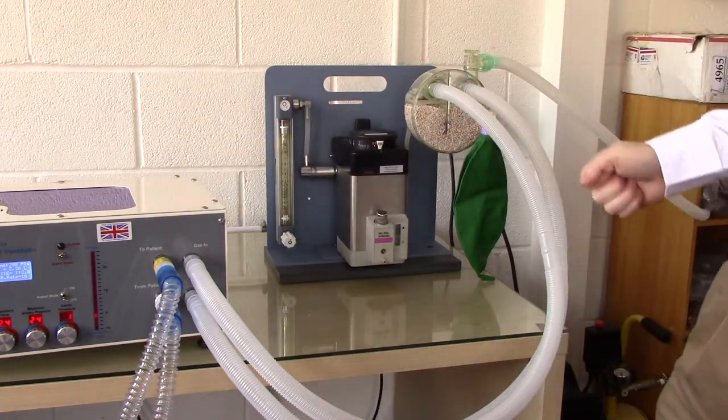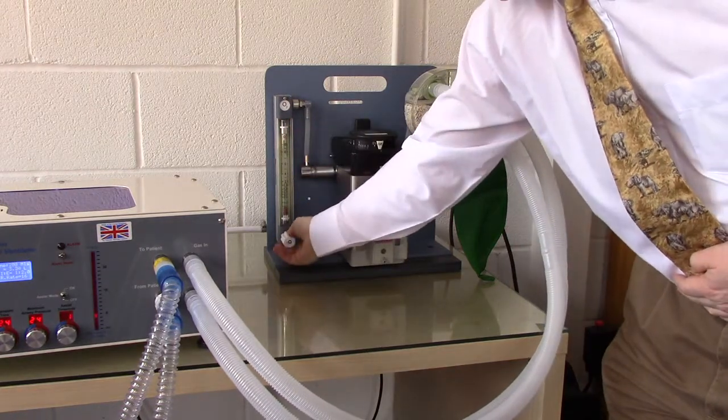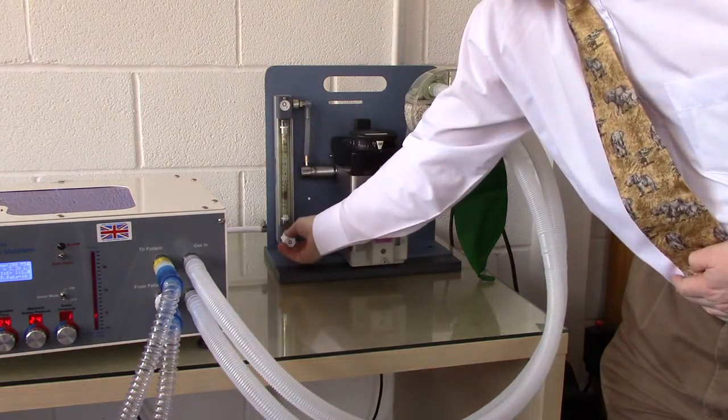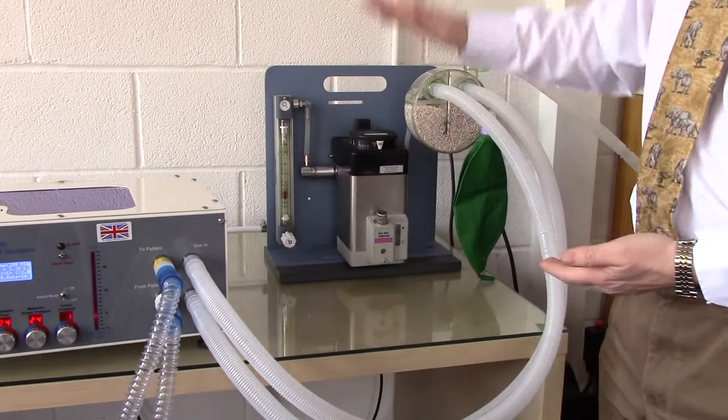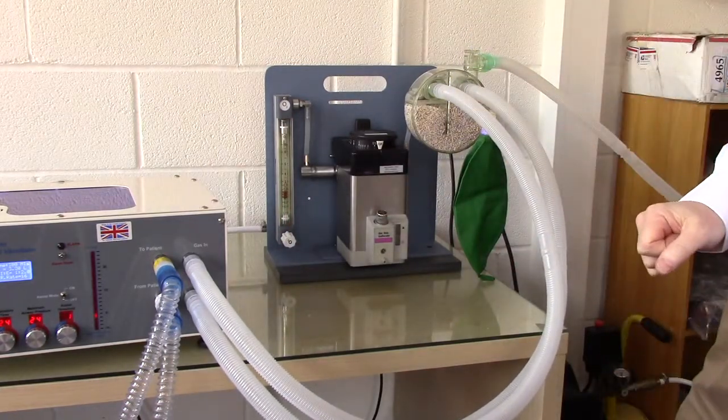So this is the tubing setup for a typical circle configuration. Set the fresh gas flow rate on your rotameter or flow meter to at least metabolic requirement, typically higher, and the gas passes through the vaporizer in the normal way. We are now ready for ventilation.